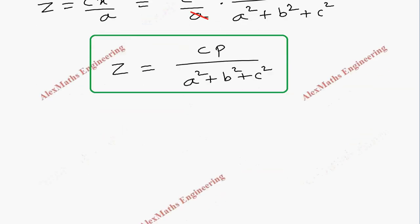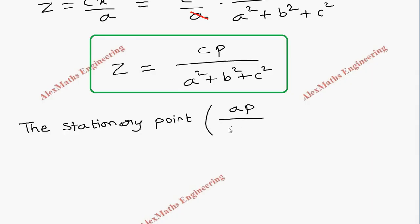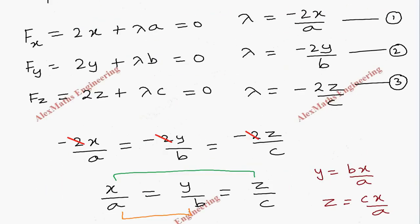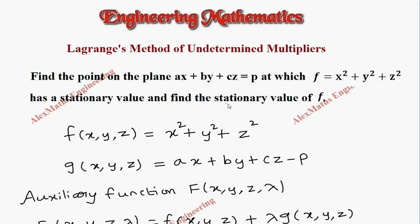This is the stationary point. The stationary point is (ap over a²+b²+c², bp over a²+b²+c², cp over a²+b²+c²). But the question also asks for the stationary value of f, so we have to substitute x, y, z into the function f.